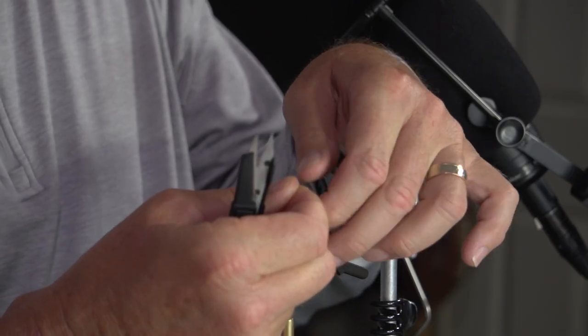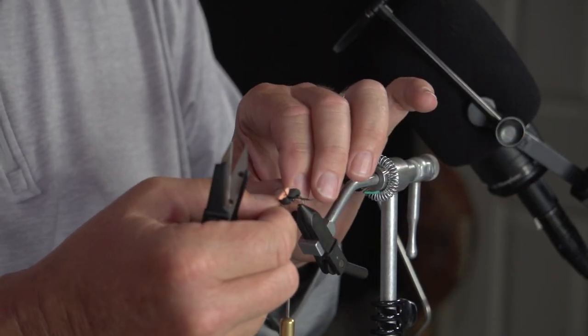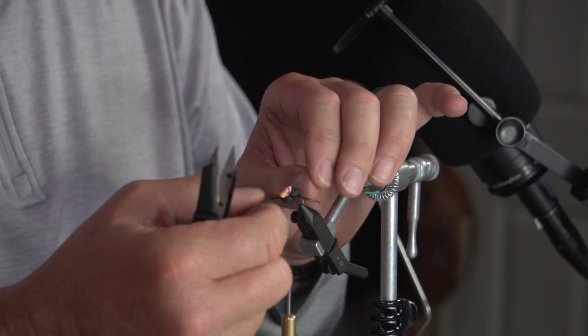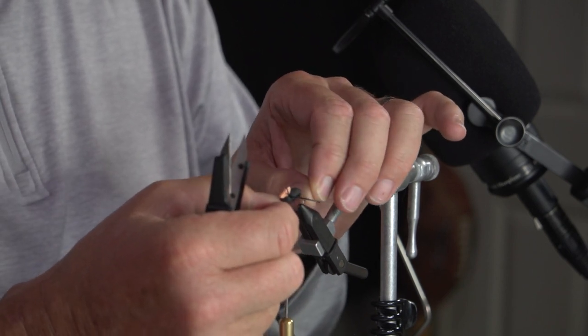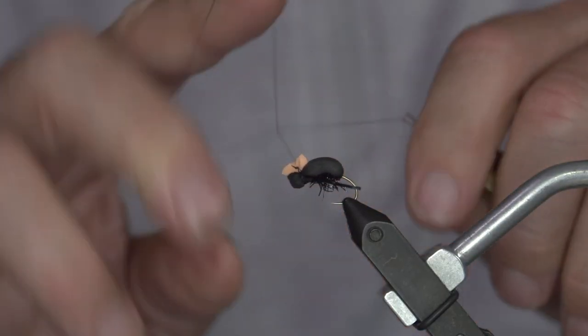End up positioning them where you want them on the bug. You can stretch and pull them, just don't break them because they will break just like any other rubber leg. Pull them to where you want them, get them in shape, and then you're there. Literally all you have to do is whip finish.